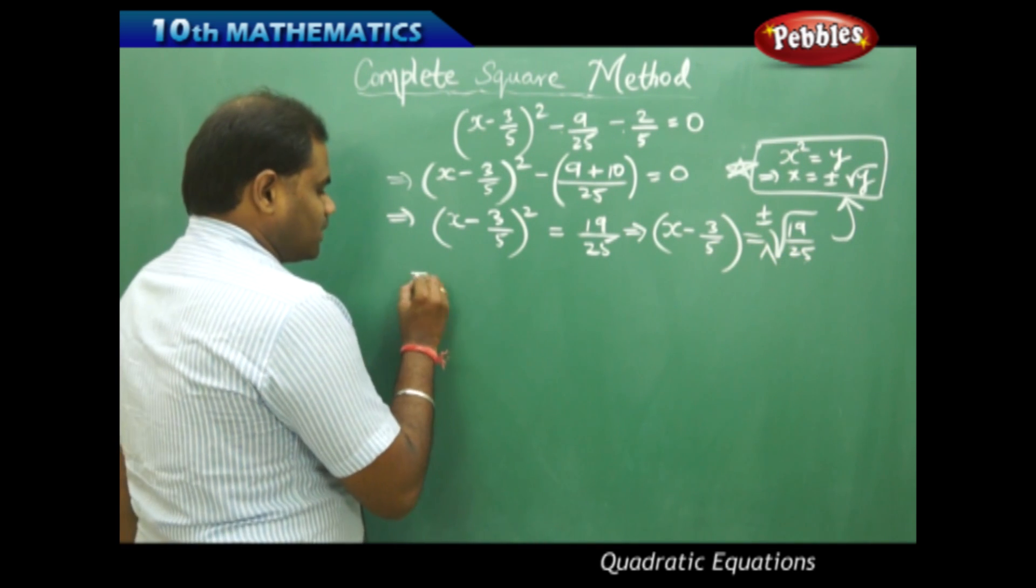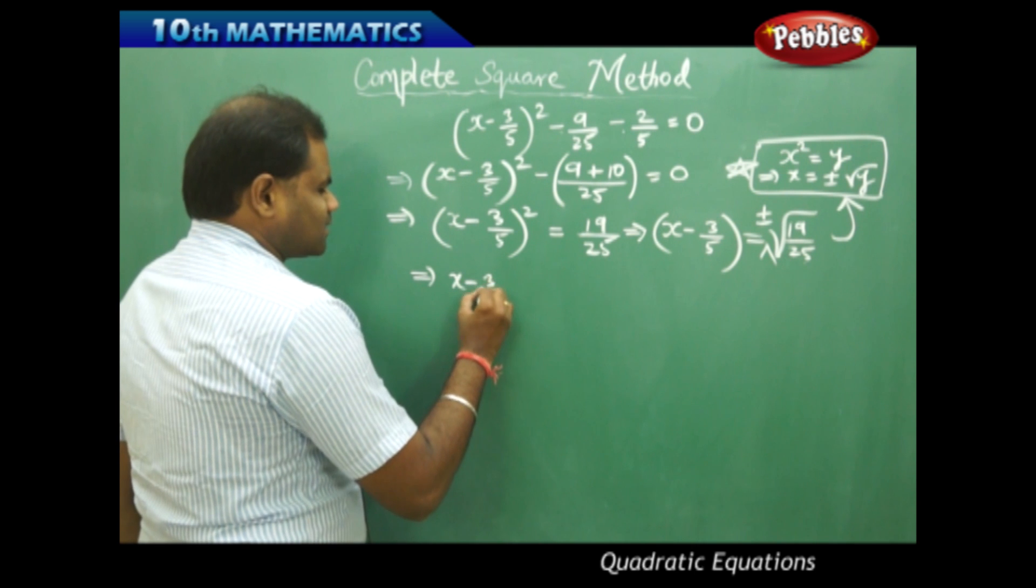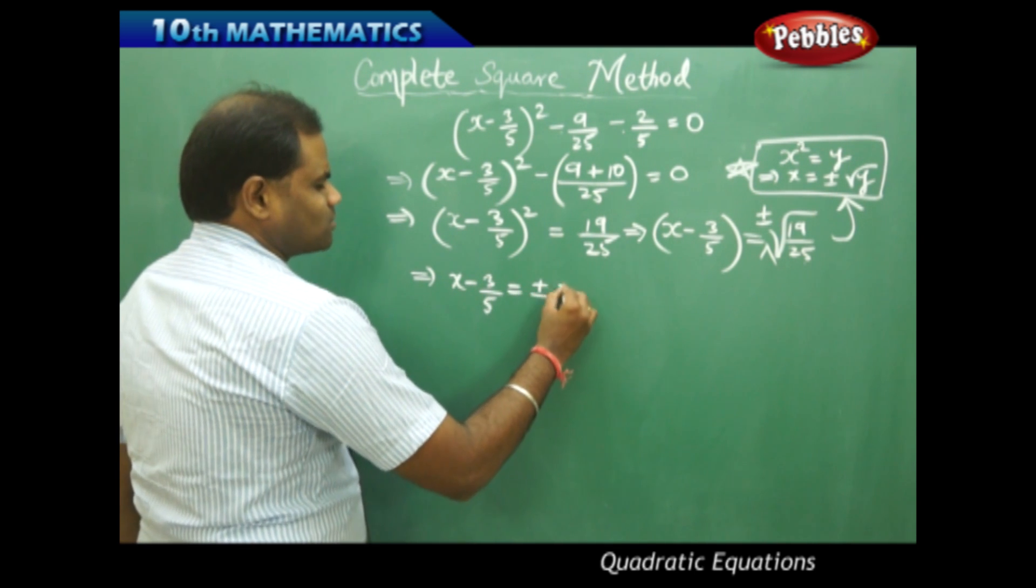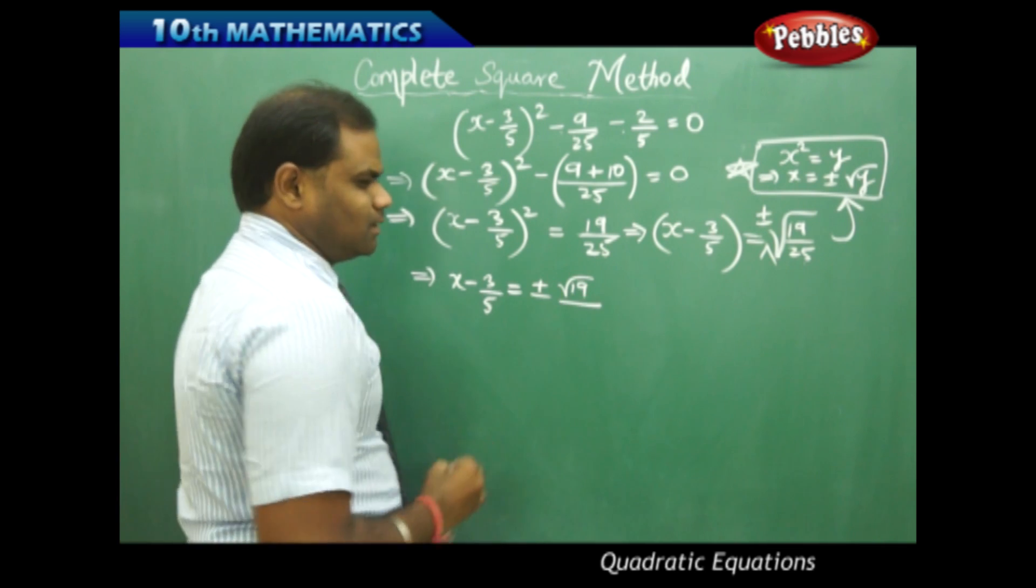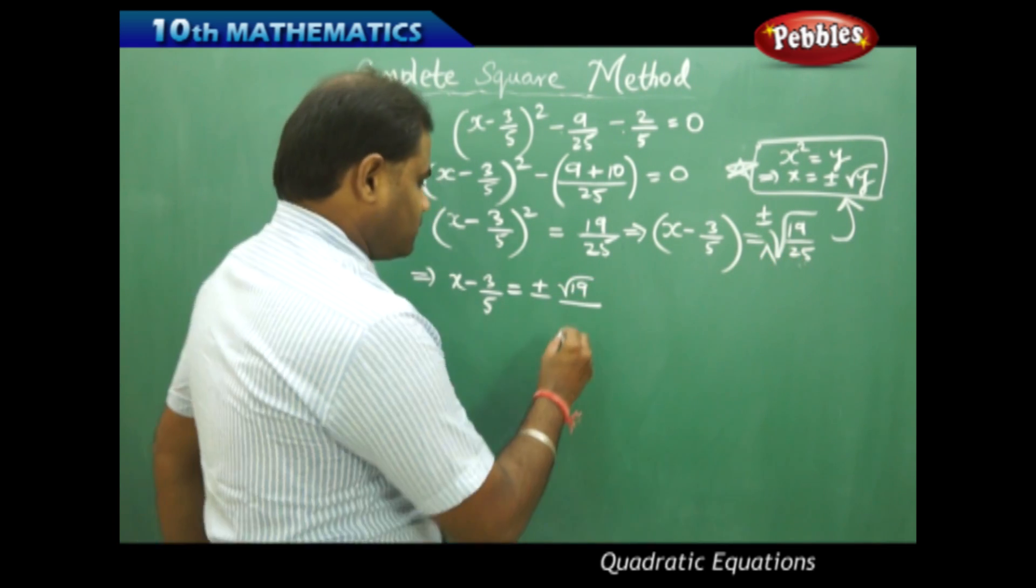Therefore simplifying this I get x - 3/5 is equal to ±√19 by √25 which is 5.